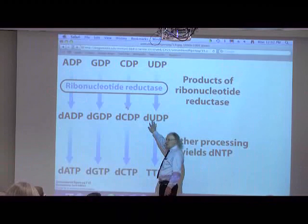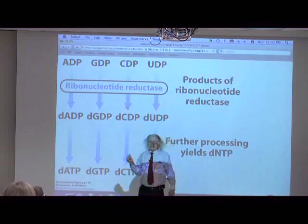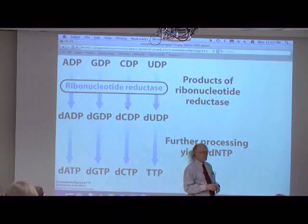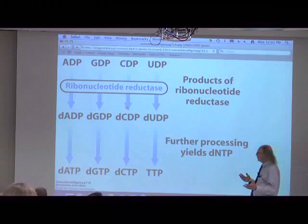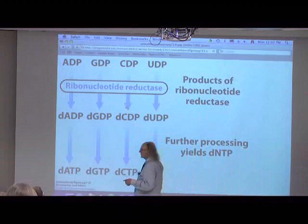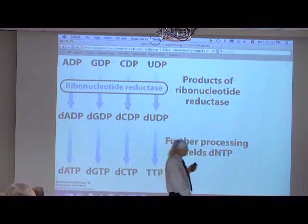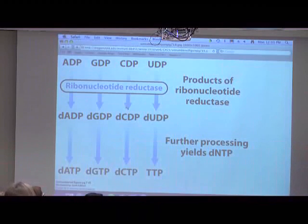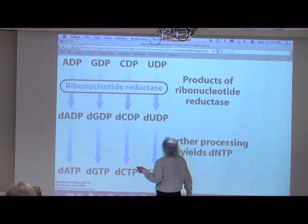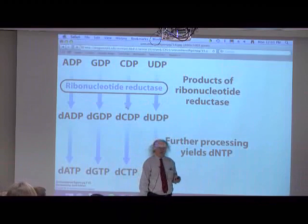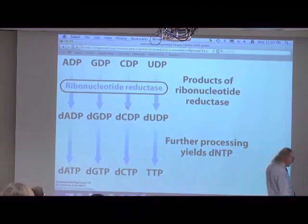One enzyme handles all the conversion of all of the ribonucleoside diphosphates into deoxyribonucleoside diphosphates, and we have a dUDP here. Thymidine nucleotides are made from the deoxyribonucleoside nucleotides. Whether we go from A to deoxy-A, G to deoxy-G, C to deoxy-C, or U to deoxy-U, all of those use the enzyme ribonucleotide reductase. This enzyme is interesting because of its mechanism and its unusual regulation — balance is achieved through this one enzyme.